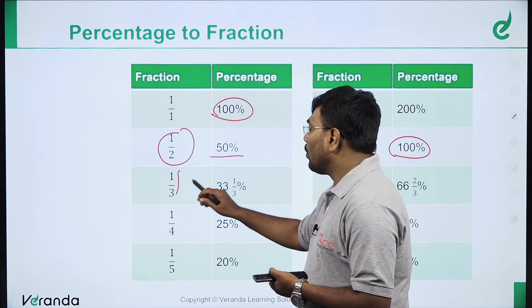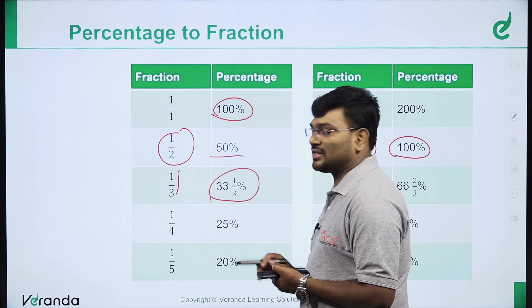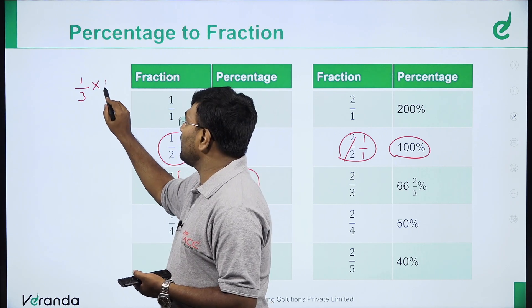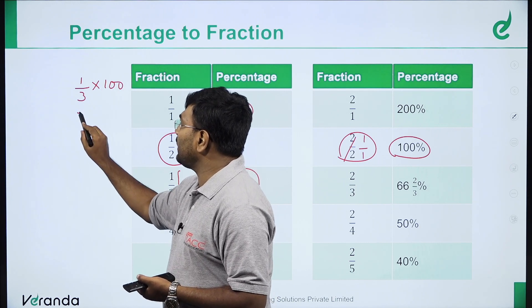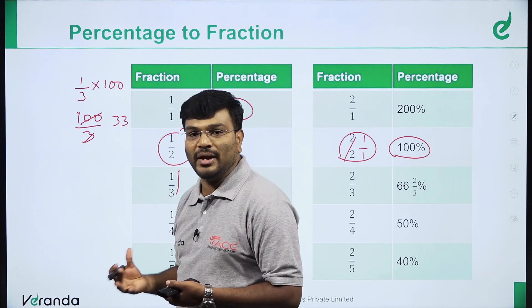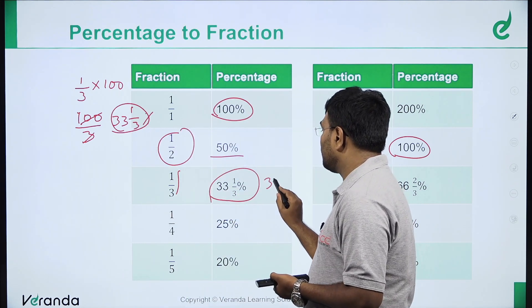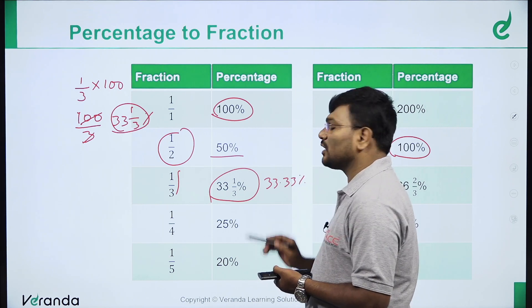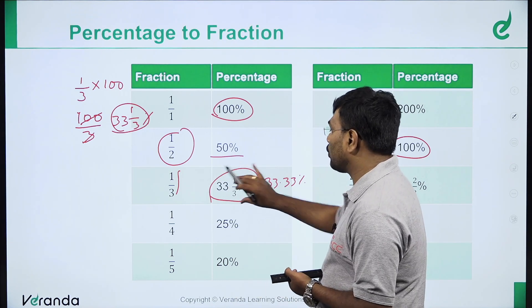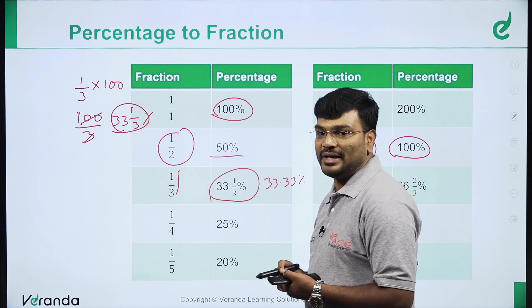1 by 3 into 100 gives 33.33%. So 1 by 3 equals 33.33% or 33 and 1/3 percent. Remember: 1 by 3 value is 33.33% or 33 1/3 percentage.